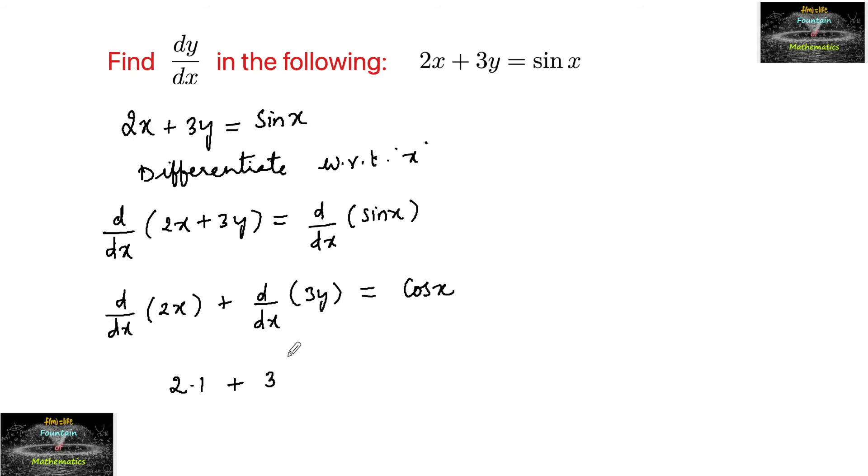So 3 into dy by dx which equals to cos x or we can write it as 3 times dy by dx is equal to cos x minus 2 or dy by dx is equal to cos x minus 2 upon 3.